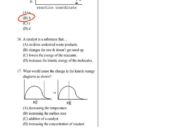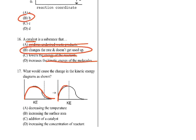A catalyst is a substance that changes the rate and doesn't get used up. It does not oxidize waste products, does not lower the energy of reactants, and does not increase kinetic energy — that's temperature. For the kinetic energy graph question: the threshold energy line used to be higher and is now lower. What would cause that? A catalyst changes the threshold energy. Answer C.